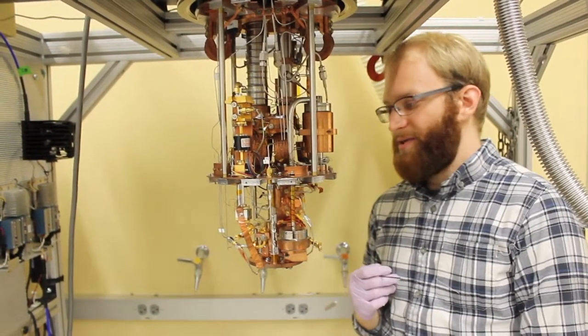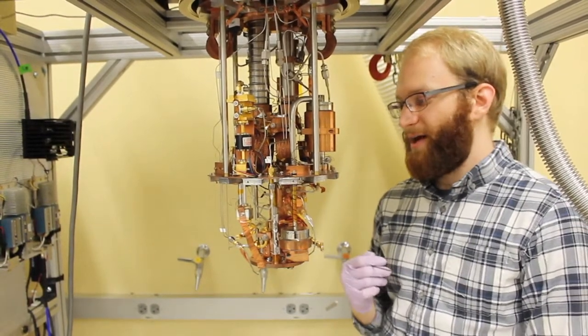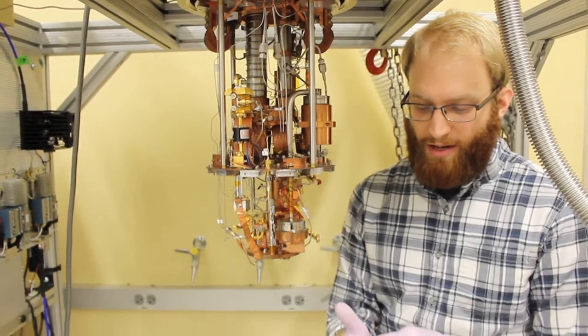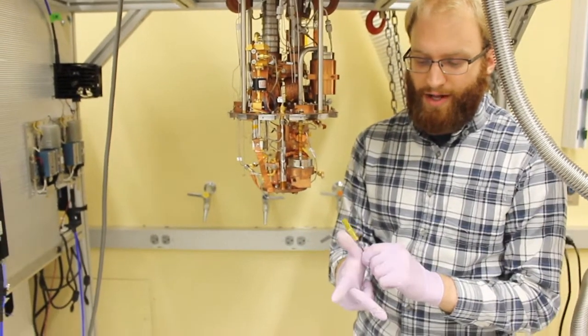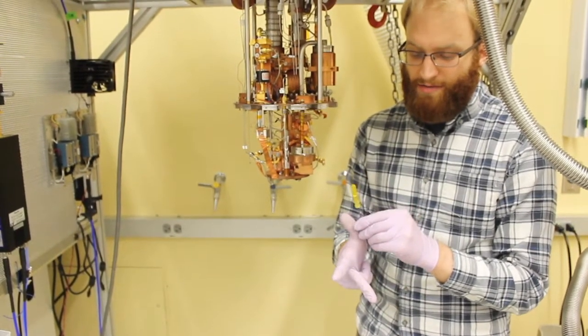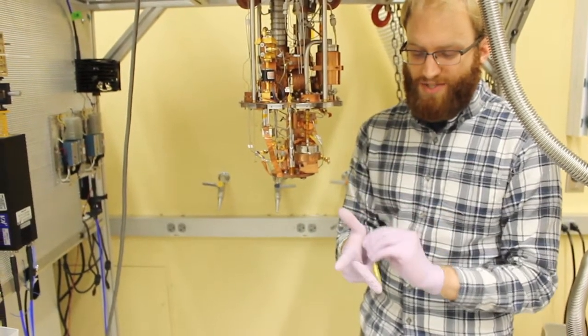One such circuit element is a circulator, which is based on the back here, which is a three-port element. If you put in power on one end, it comes out on the other end and not the third end. Putting power in on this end flows it out the third port and not on any of the other ports, and the third port flows out the first port.